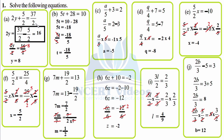So 2y as it is, equal sign, 37 over 2 as it is. We transpose this number because our aim is to separate the variable y on the left-hand side. So 37 minus 5 is 32, 32 over 2 is 16. Therefore 2y equals 16. To get rid of 2, we divide both sides by 2, so y equals 8.